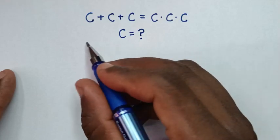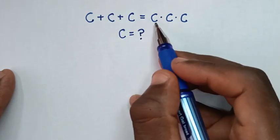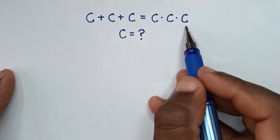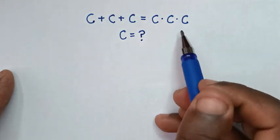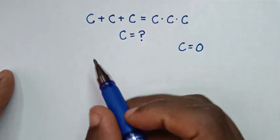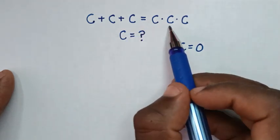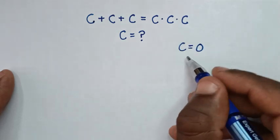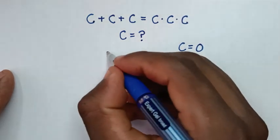Welcome. We need to solve this math problem: c plus c plus c is equal to c times c times c — find the values of c. By inspection or testing, we can see c equals zero, because substituting zero gives zero plus zero plus zero equals zero times zero times zero, so both sides are equal. But c equals zero is not the only solution; we have other solutions.